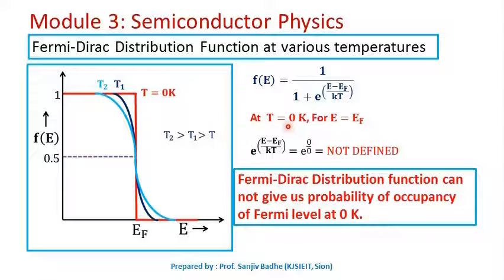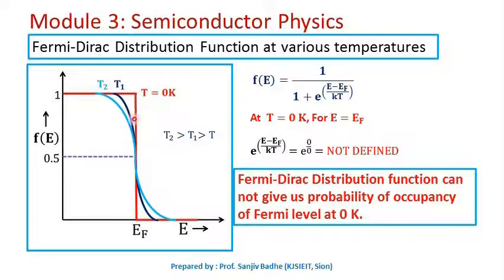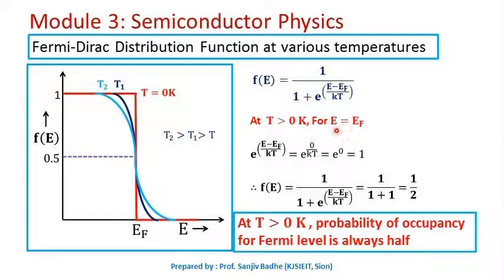At T = 0 K and E = EF: the exponent becomes 0/0, which is indeterminate and not defined. Therefore, we cannot calculate the probability of occupancy at the Fermi energy level at 0 Kelvin using the Fermi-Dirac distribution function. The probability does not have a definite value here, representing a transition in the graph.